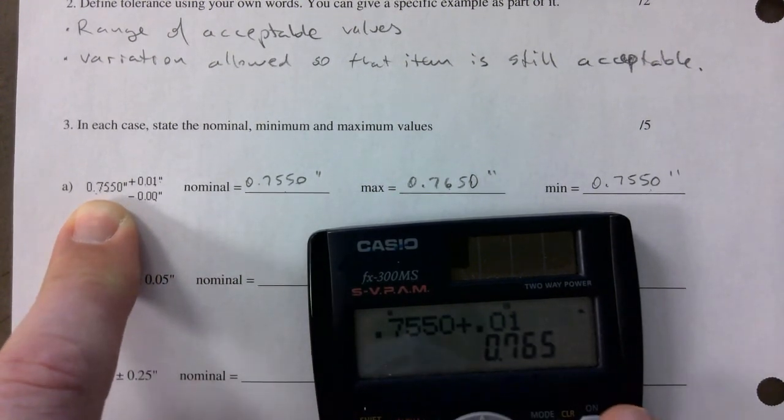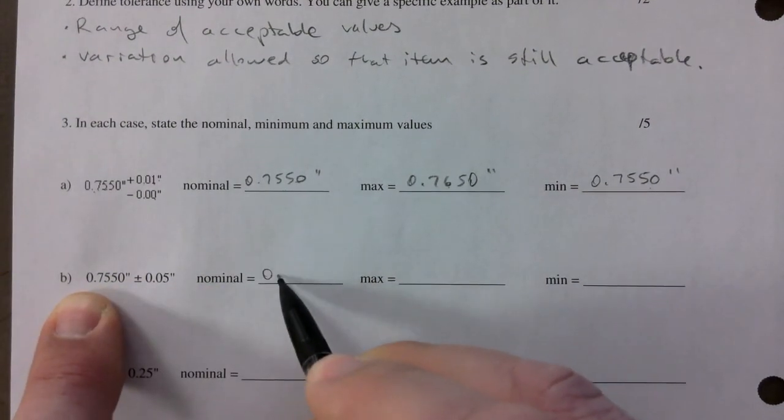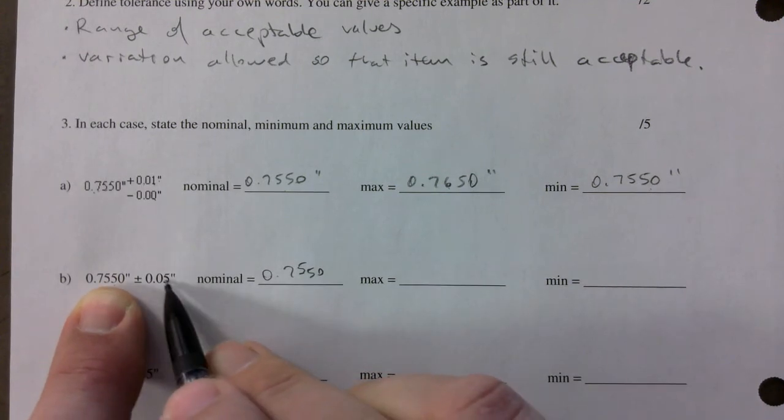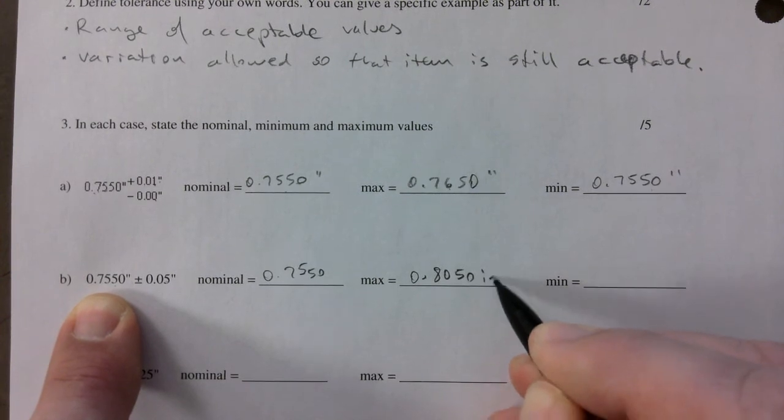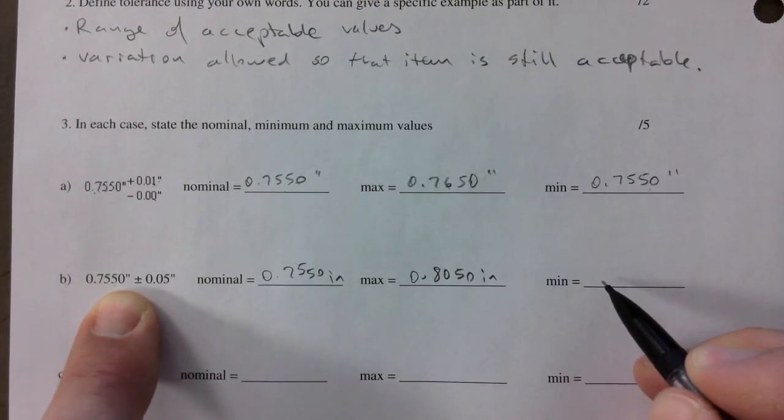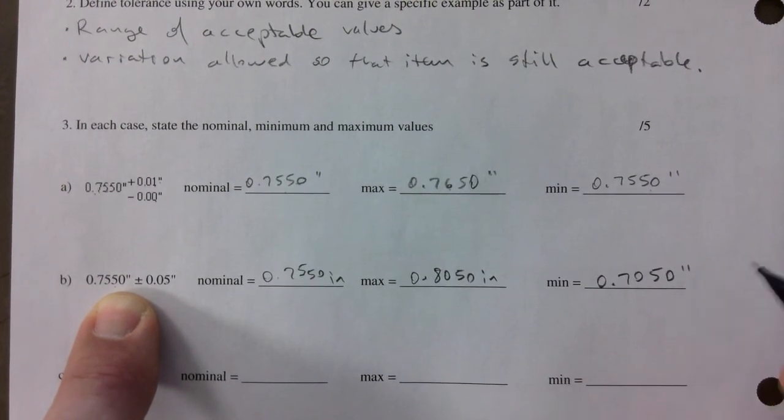Nominal, you just write down that number right up front. Max, you just add, you get 0.8050, and I'll just add inches everywhere. Minimum is 0.750 because you subtract that to get the minimum.